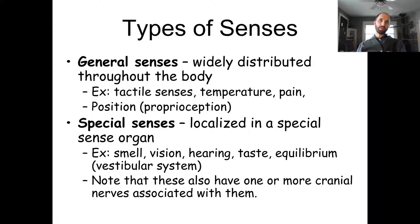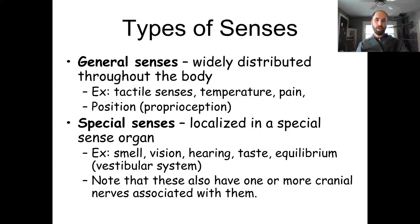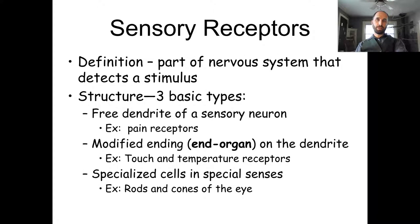Special senses have their own special organ and can usually only be detected on your head — sight, hearing, taste, smell, and the vestibular system. Special senses always have at least one cranial nerve that allows you to detect that sense.